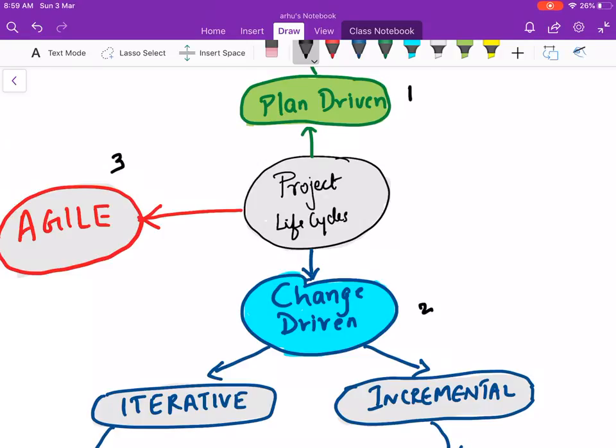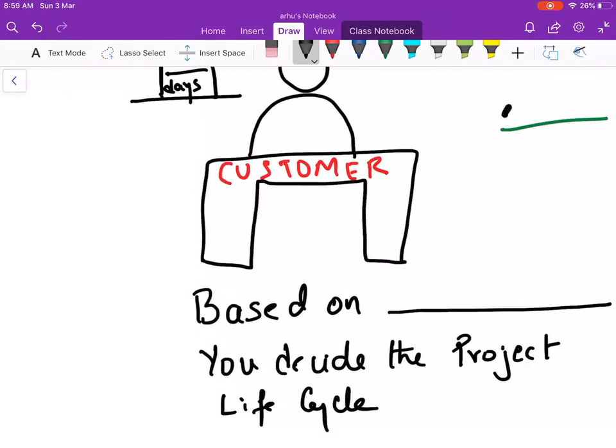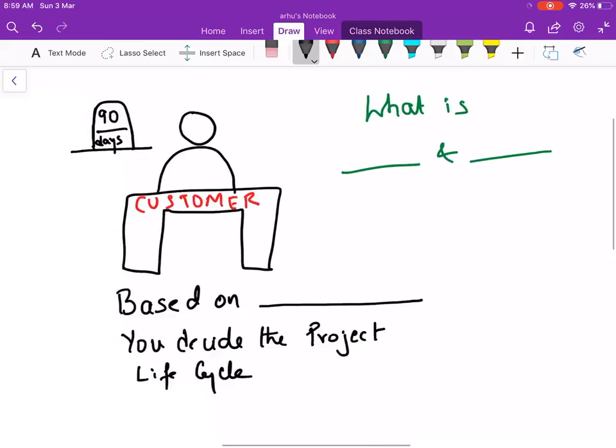Before we go into this we need to understand an important concept. Over here I have in front of me a customer. Now the customer has some expectations, and based on some very important concept in project management the project life cycle is decided. What is the project management concept you need to understand to decide a project life cycle along with the customer expectation? It is called as the constraints.